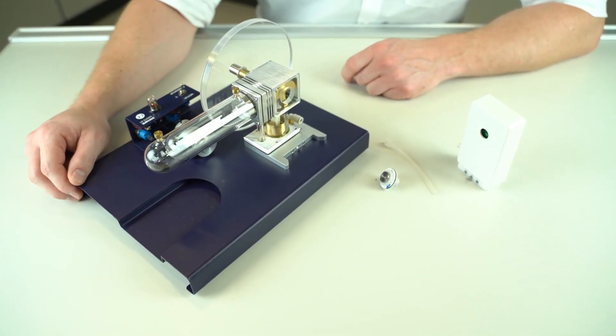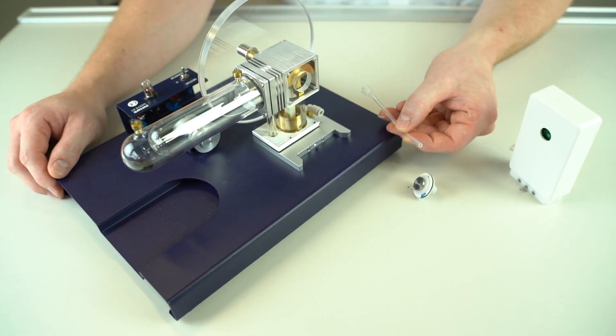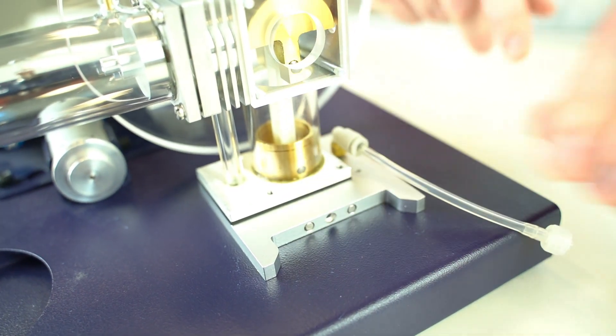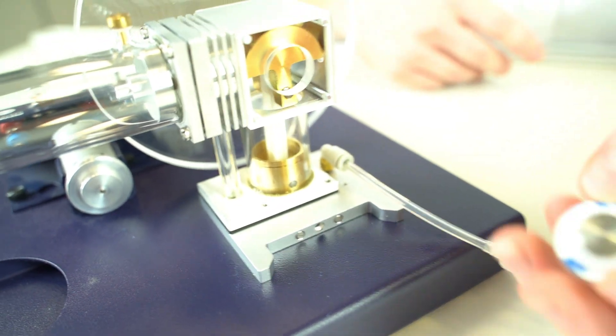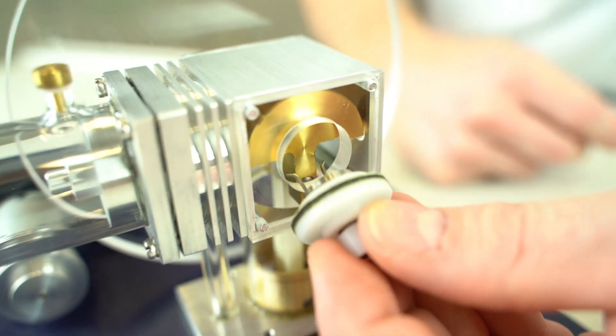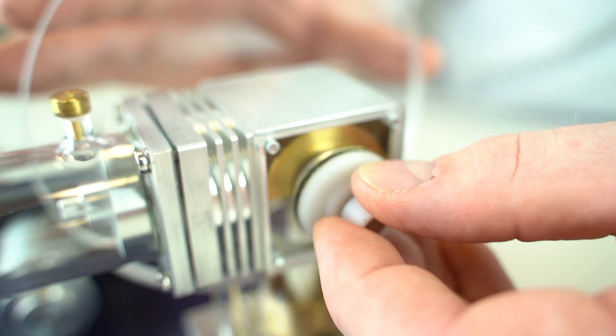Now in order to connect the module with the base plate we first plug in the silicon tubing for the pressure measurements and secondly we glue the rotary motion adapter onto the engine. Make sure that the two pins are well positioned inside the module.